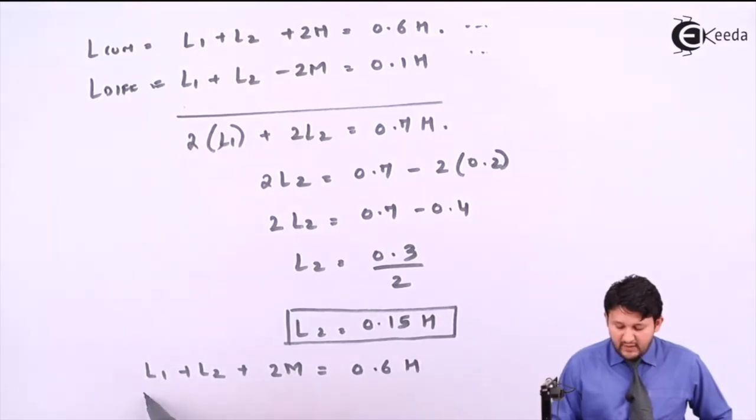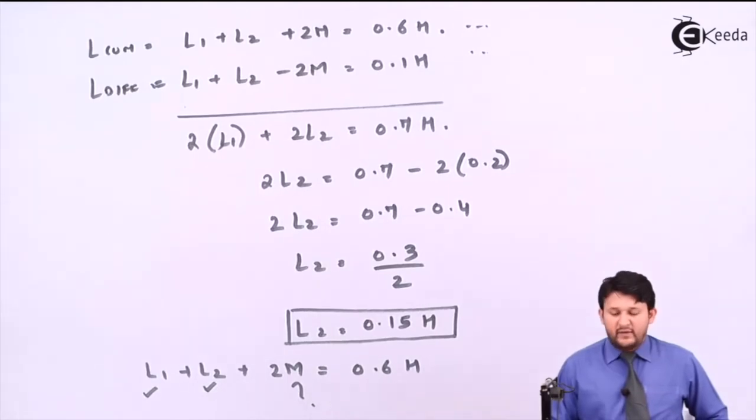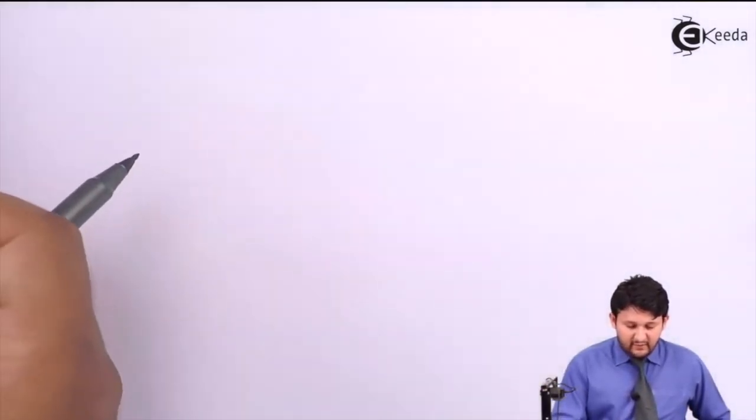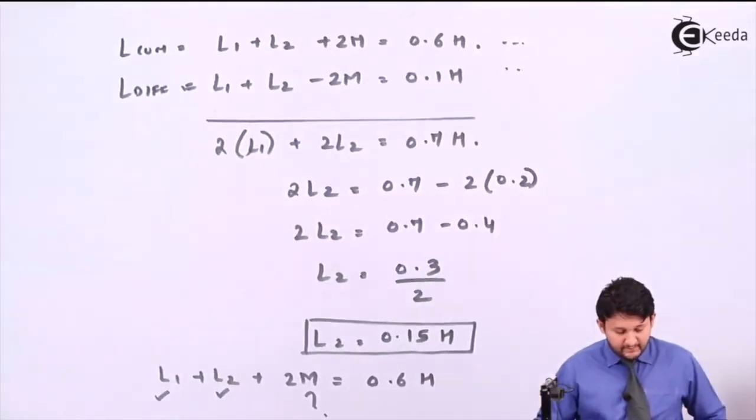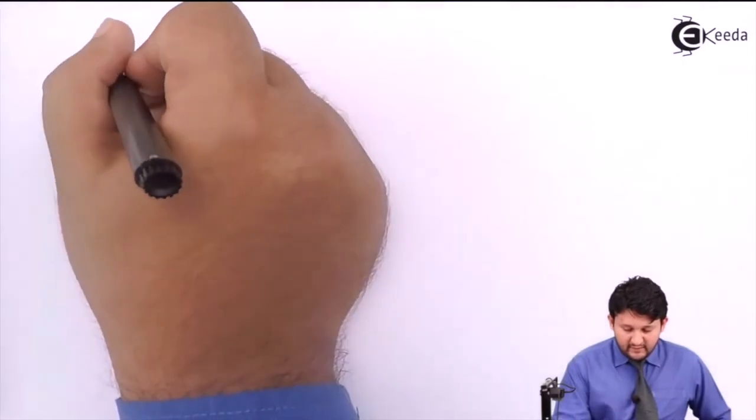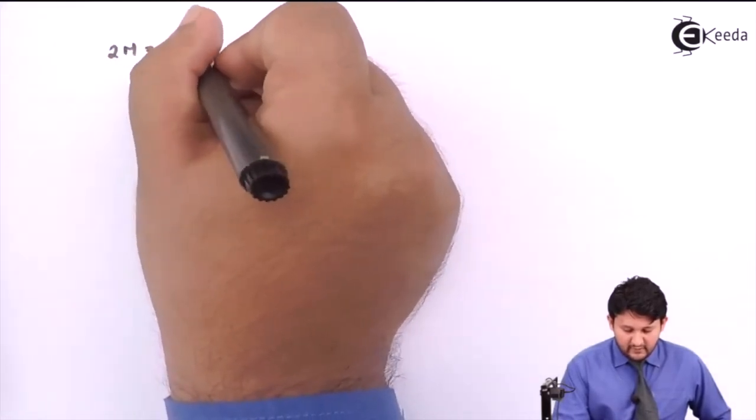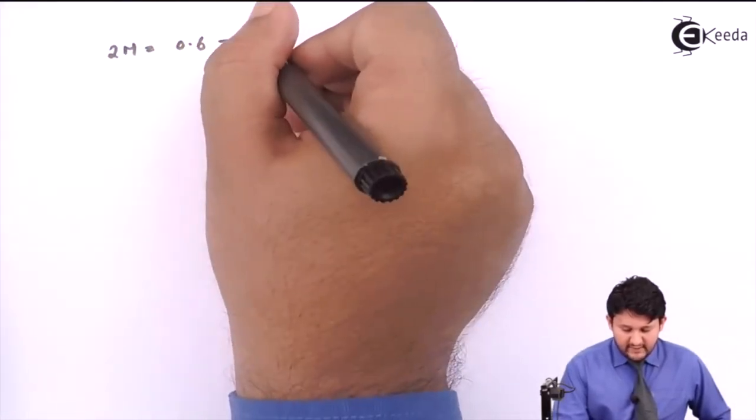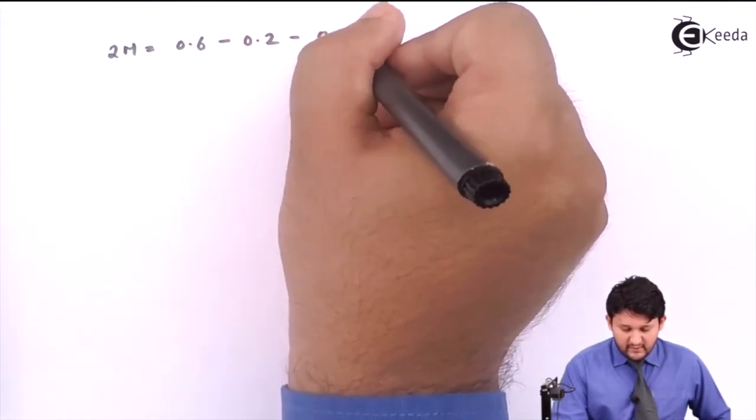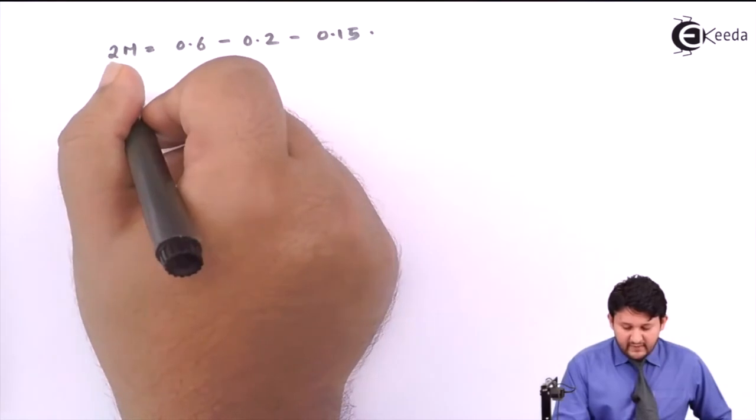You have the value for L1, you have the value for L2, you just need to find the value for M. So let's put the value for L1 and L2 and get the value for M. So your calculation for 2M is equal to 0.6 minus L1 value, which is 0.2, minus L2 value, which is 0.15.